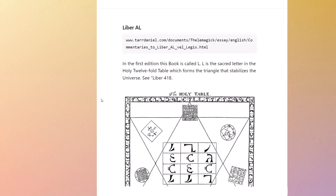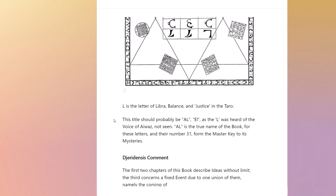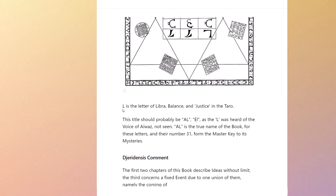So he says the first edition of this book is called L. L is the sacred letter, the holy 12-fold table, which forms the triangle that stabilizes the universe. This triangle we can infer is probably referenced where he says L is the letter of Libra, balance and justice in the tarot — spelled T-A-R-O-T, the preferred spelling. One reason is that you can turn those letters into Hebrew letters and get the number 671, which is also the number of Adonai the Lord, spelled out in full. Adonai is 65.